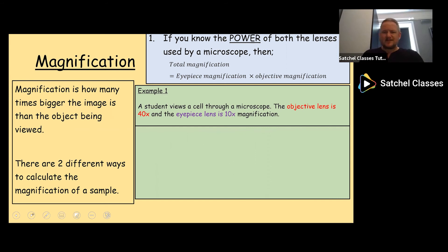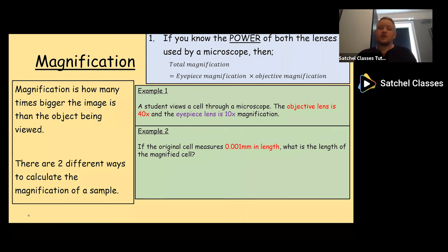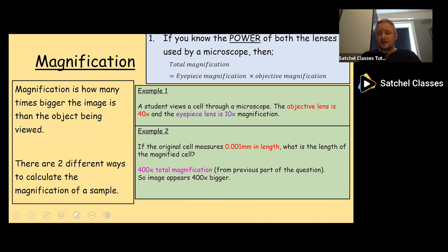That's our first way of doing it. But then sometimes we might get a different type of question. How about if they tell us the original cell measures 0.001 millimeter in length, what is the length of the magnified cell? From the previous question we calculated total magnification of 400 times. That means the image appears 400 times bigger than the original cell. So to find the length of the magnified cell I take the object's length 0.001, multiply it by 400 times and it'll give me the magnified length 0.4 millimeters. So that's the first method, working it out using the known values for the objective and the eyepiece lens.